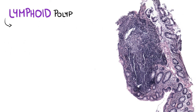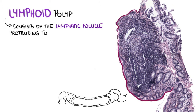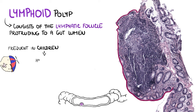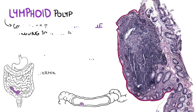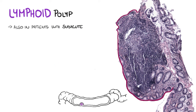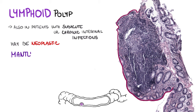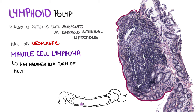A lymphoid polyp consists of a lymphatic follicle protruding into the gut lumen. They are frequent especially in children, because they show a physiological hyperplasia of the intestinal lymphatic tissue, especially in the terminal ileum. They can also be found in patients with subacute or chronic intestinal infections. However, a lymphoid polyp may be neoplastic as well. Especially mantle cell lymphoma, in cases of intestinal localization, may manifest as multiple polypoid mucosal lesions — a condition called lymphomatoid polyposis.